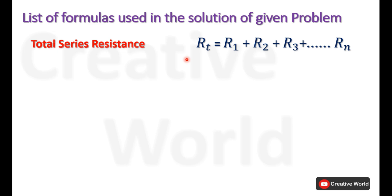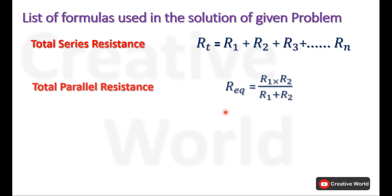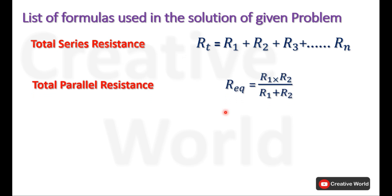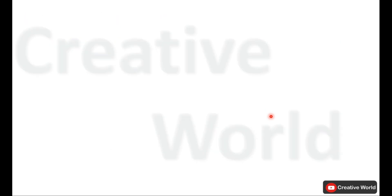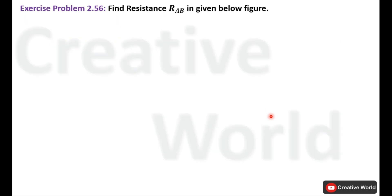calculated by taking the sum of all resistances connected in series. We will also be using the parallel equivalent resistance calculation formula for two parallel connected resistances, calculated by taking the product of both parallel connected resistances dividing by their sum. Now let's move towards problem exercise 2.56: find resistance R_ab in the figure below.